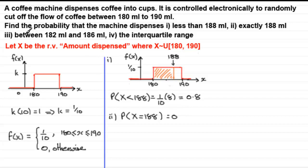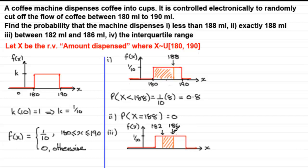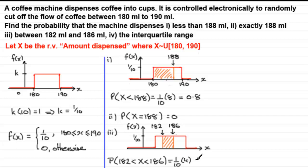In part three, we need to find the probability the machine dispenses between 182 and 186 millilitres. Looking at the sketch, that's the shaded area between 182 and 186. The probability equals the height, one-tenth, times the width, which is 186 minus 182 = 4 units. So it's one-tenth of four, which equals 0.4.